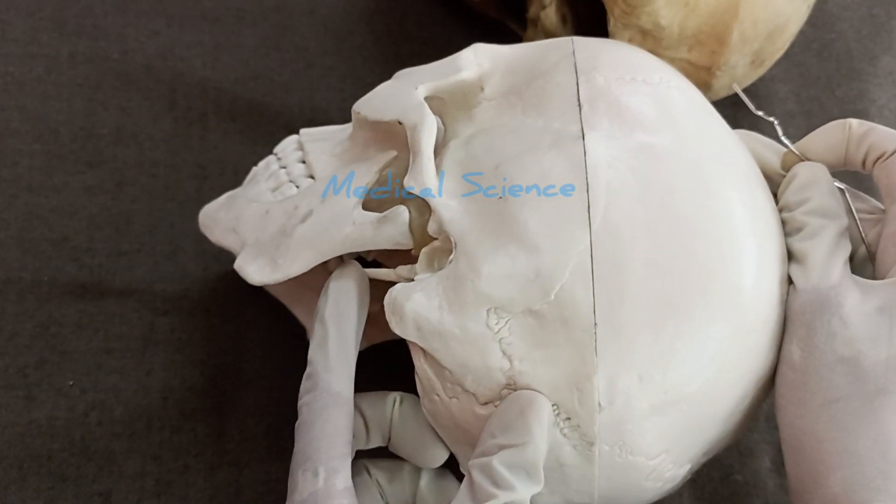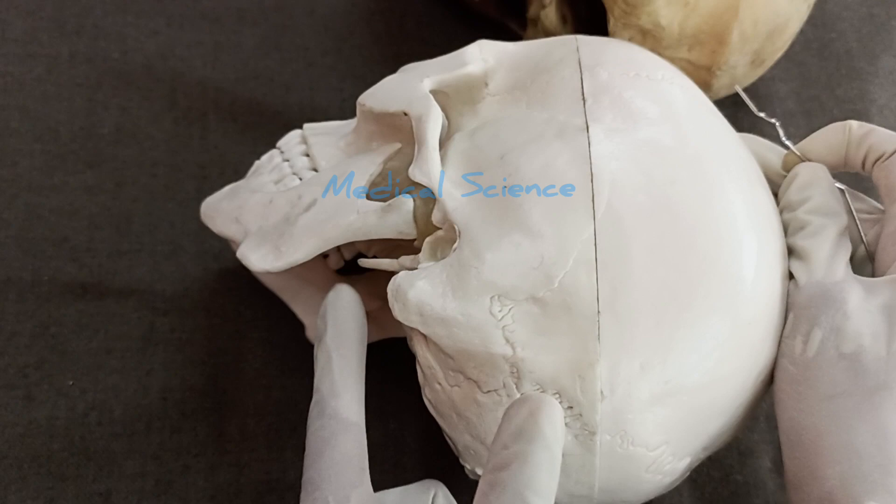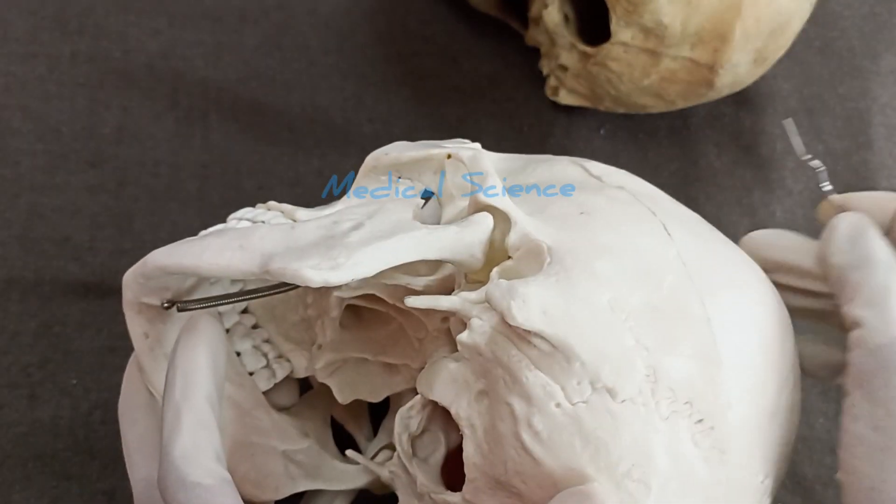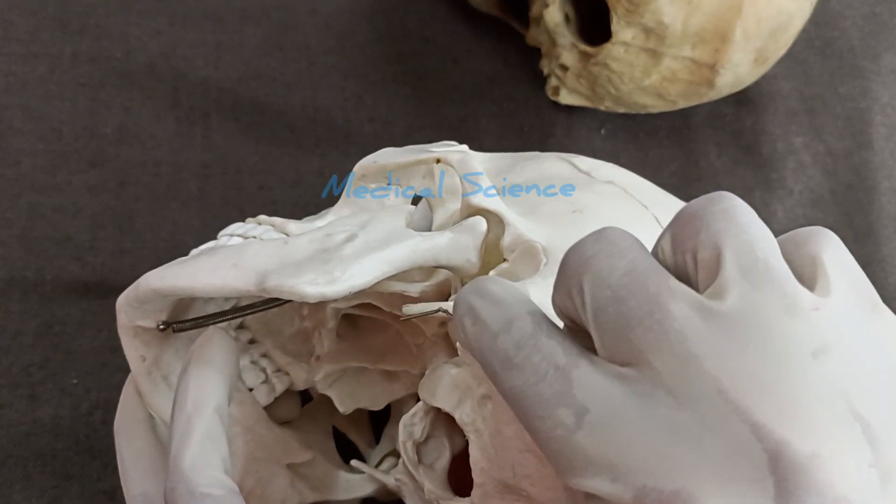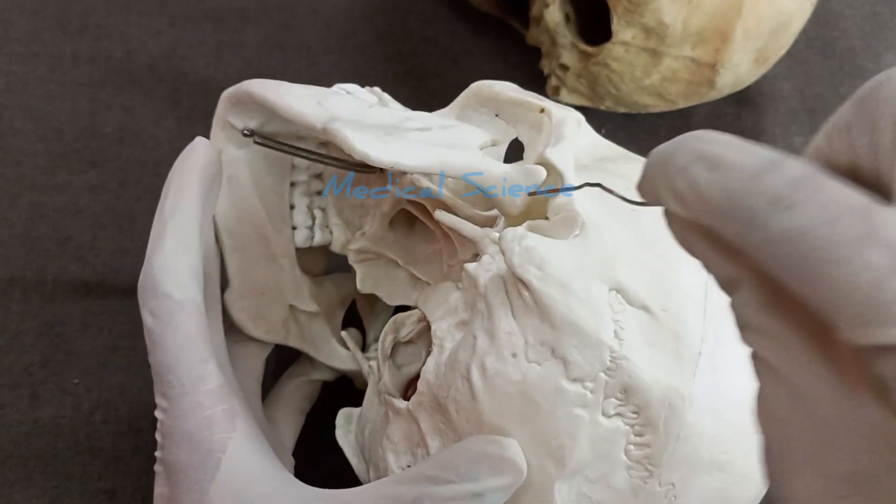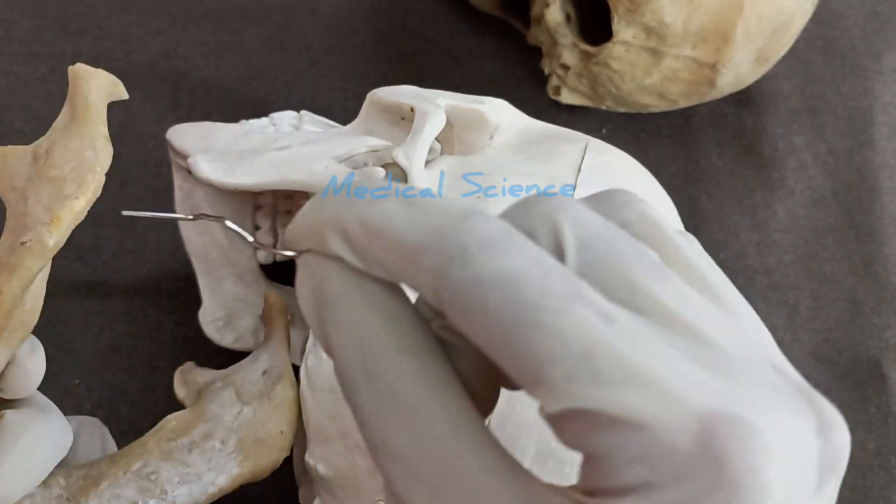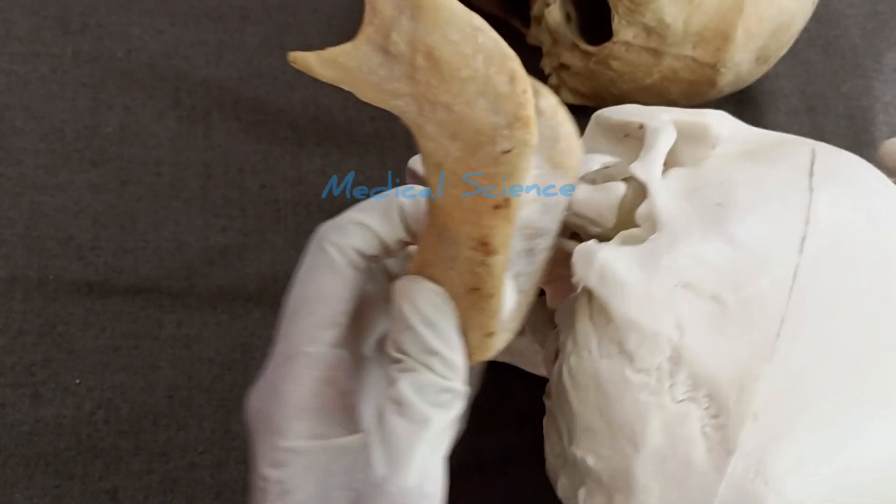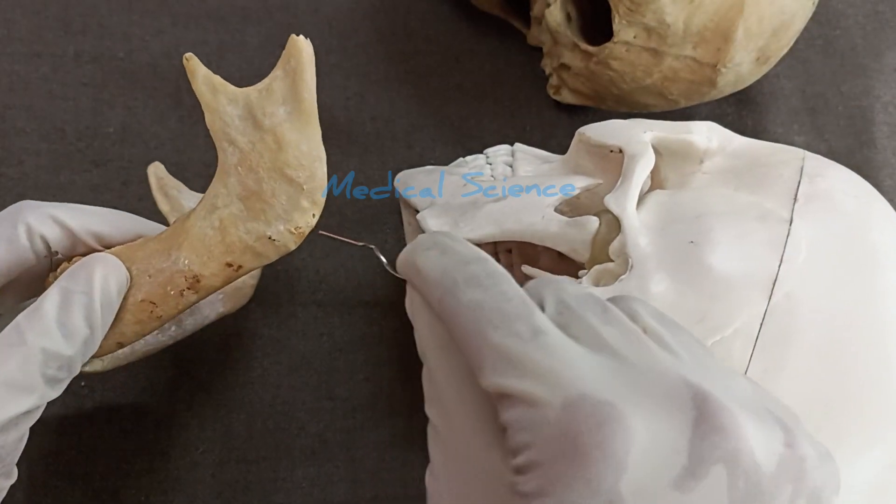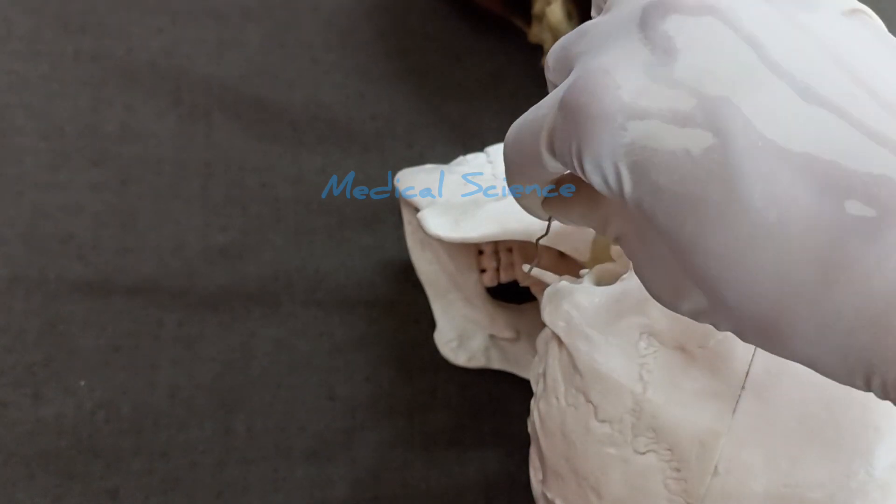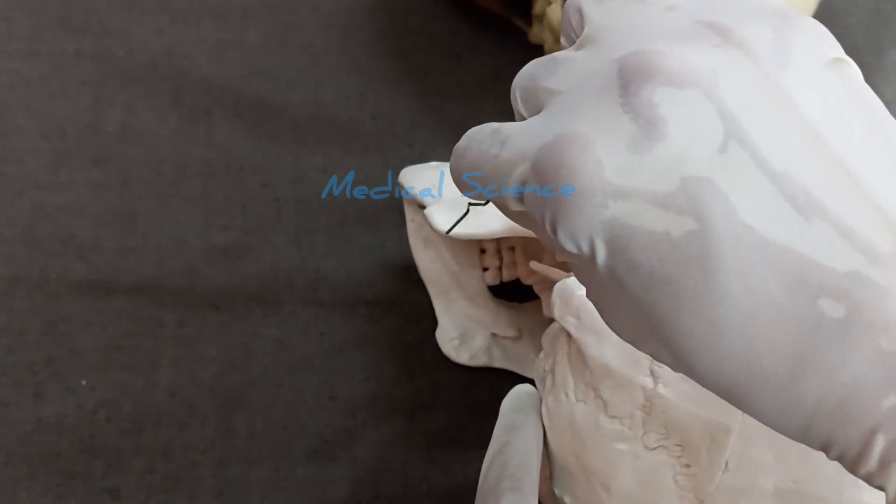The ligaments are the stylohyoid ligament, which extends from the tip of the styloid process to the lesser cornu of the hyoid bone, and the stylomandibular ligament, which extends from the styloid process up to the angle of mandible.